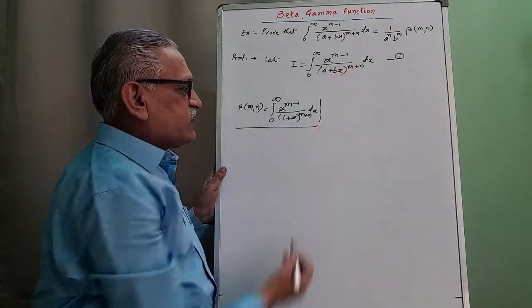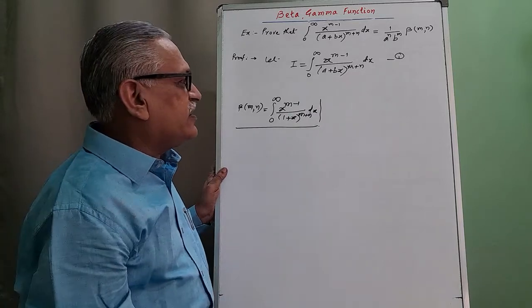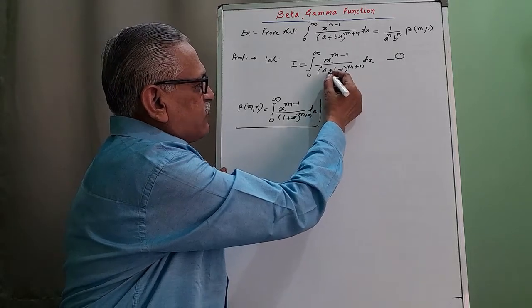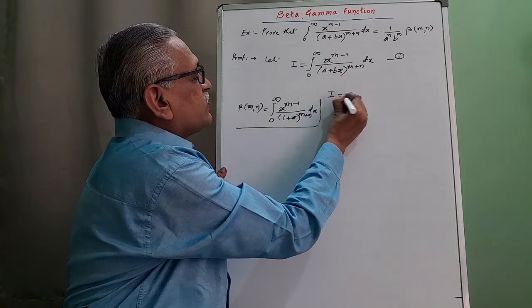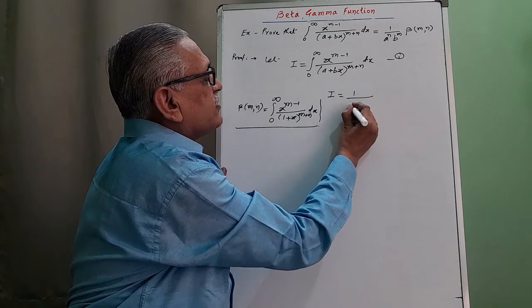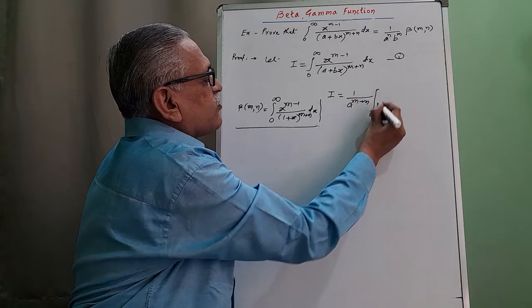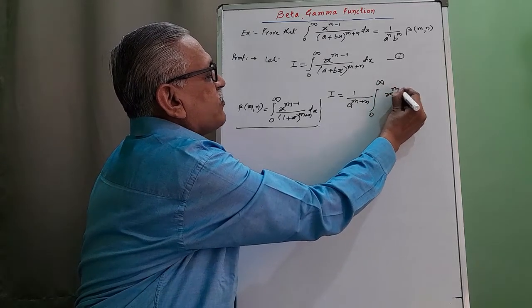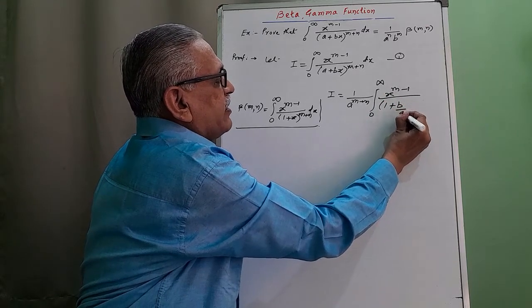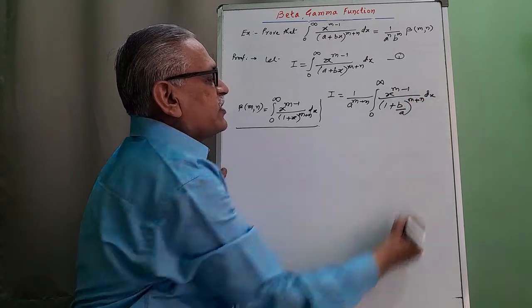We have x to the m minus 1 in the numerator. In the denominator we have a plus bx, but we require (1 plus x). To get that 1 plus x term, we take a common from the denominator. Therefore I equals, taking a outside the bracket raised to m plus n, giving a raised to m plus n in the denominator, with the remaining integration from 0 to infinity of x to the m minus 1 divided by (1 plus b by a times x) raised to m plus n, with respect to x.